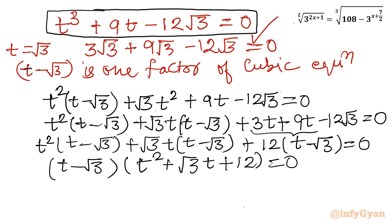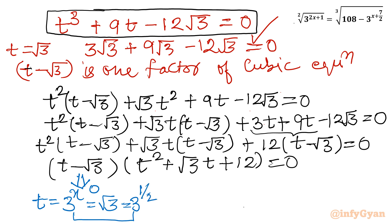Setting the first bracket to zero: t equals root 3. Recalling our substitution, 3 power x equals t equals root 3, and root 3 equals 3 power half. Since the bases are the same, the powers must be equal, so x equals one half is our first solution.